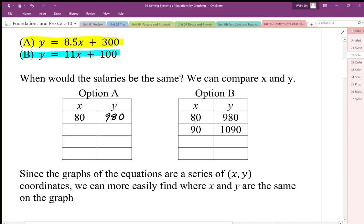So at 90 hours, option B is going to be 90 times 11 plus the original 100 is 990 plus 100. So that's going to be my 1090 here. And option A, $8.50 times the 90 hours, that's 765. And then I'm going to add my original $300. And that's going to be definitely less.